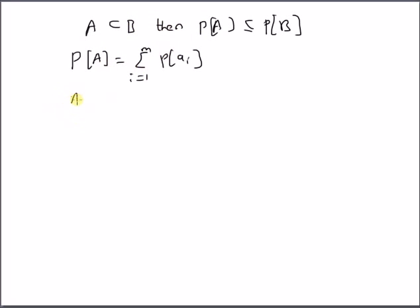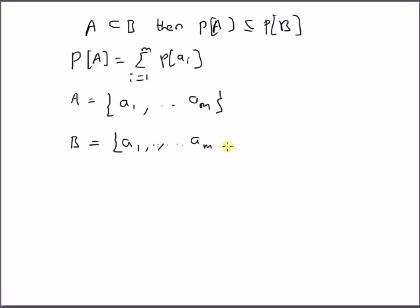Let us define an event A, which consists of the outcomes A1 up to Am, and another event B, which consists of A1 as a subset — that is, A1 up to Am — and also a few more elements: Am+1, Am+2, and so on up to Am+k. Clearly, A is a subset of B.